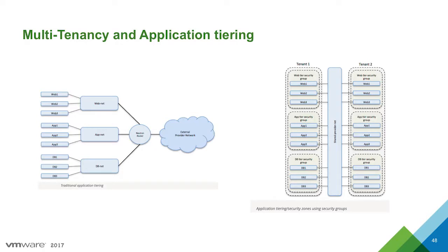In cloud-based architecture, multi-tenancy refers to the ability for different users to share a common underlying infrastructure — server, network, storage, service, and applications. In other words, infrastructure resources can be sliced and distributed so that every customer or tenant can get a piece of the cloud that satisfies their needs.